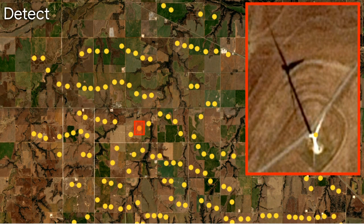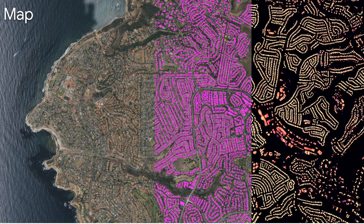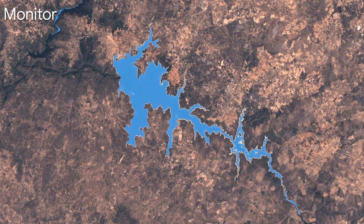For an example of detection, we built a computer vision algorithm that can detect wind turbines and can now run anywhere in the world — we used Google Cloud to map all wind turbines in the United States overnight. For mapping, this convolutional neural net maps out building footprints in high-resolution satellite imagery. And for monitoring change over time, this pixel-based random forest algorithm uses spectral information from the Sentinel satellite to mask where water is at any time — you're seeing this reservoir in Northern California dry up during the drought of the previous few years.